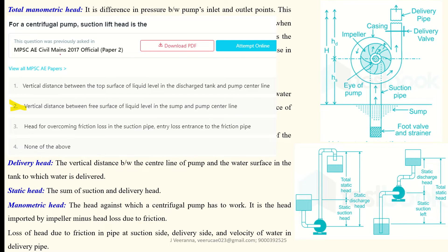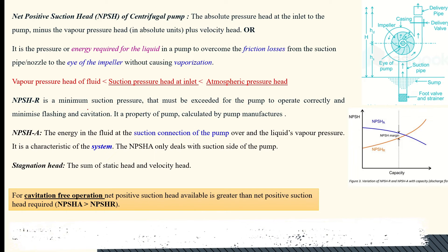For examination purposes: suction lift is the vertical distance between the free surface of the liquid in the sump to the center line of the pump — that is, from the center line of the impeller to the water source. That is called your suction lift.